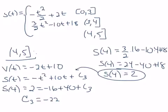So that means our last one is going to be negative t squared plus 10t minus 22. Beautiful. And there is our formula for position.